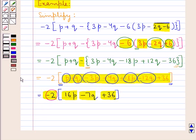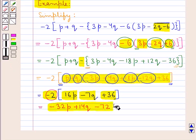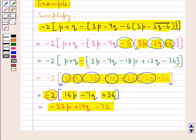This is equal to minus 2 into 16p, which is minus 32p. Minus 2 into minus 7q is plus 14q. Minus 2 into plus 36 is minus 72. Now we don't have any brackets in this obtained expression, so this means we have simplified the given expression. For an expression involving brackets, we can simplify by following the order of removal of the brackets.